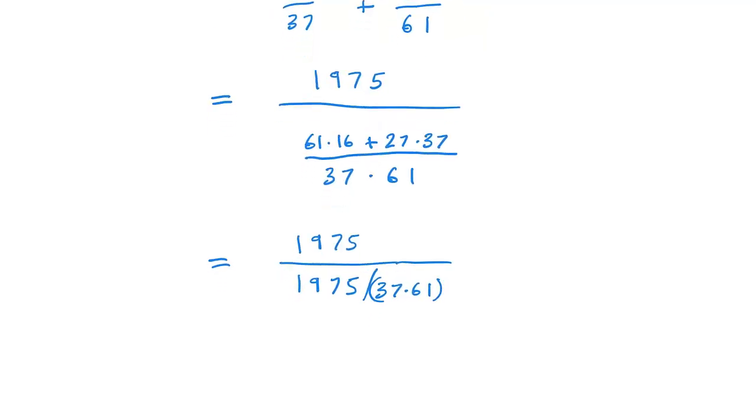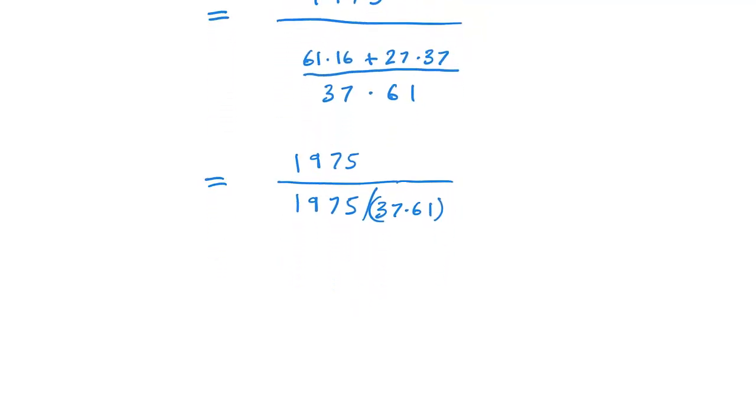From here, we can use our rule of changing division to multiplication by taking the reciprocal of the fraction. So we'd have 1975 multiplied by 37 times 61 divided by 1975.